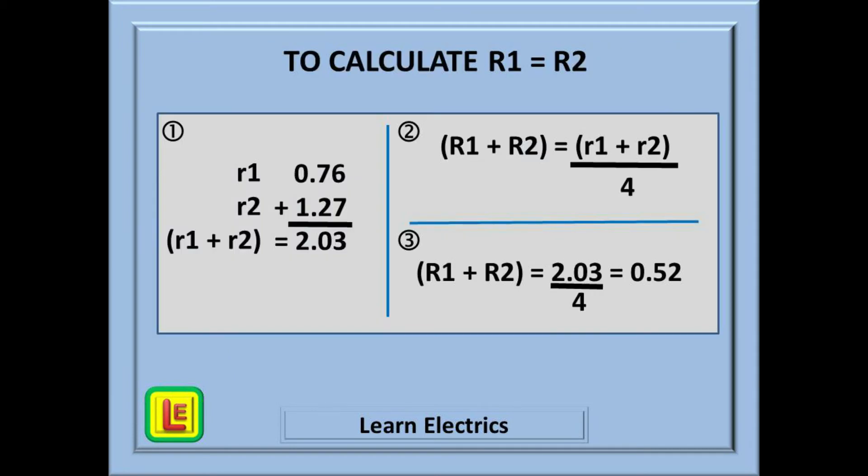To calculate R1 plus R2, do the following. Step 1: From our earlier measurements, add together little r1 to little r2, and we get a number. In this case, 2.03. But we have not finished yet, and this next step is what most people forget to do. Big R1 R2 is found by dividing this number, little r1 little r2, by 4.